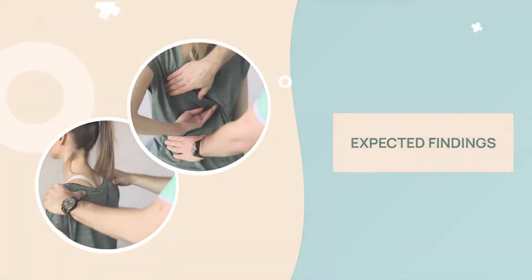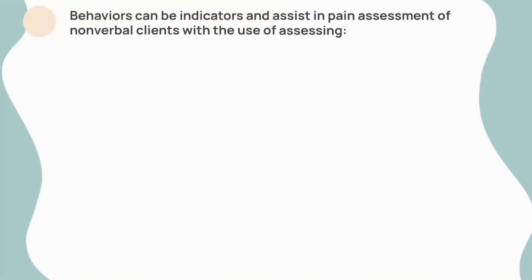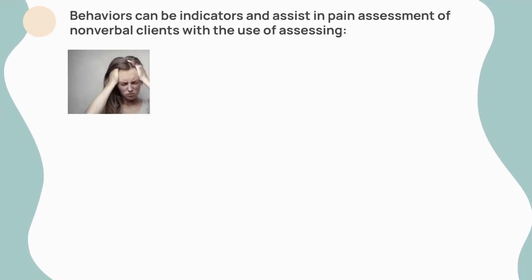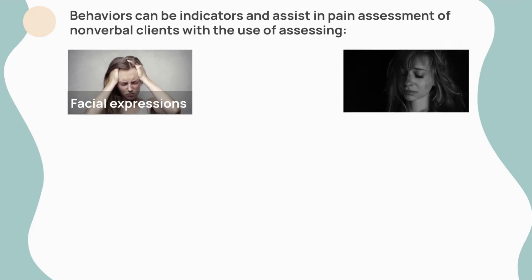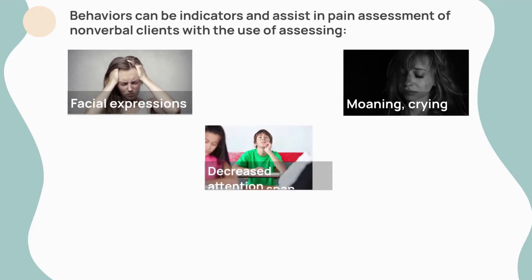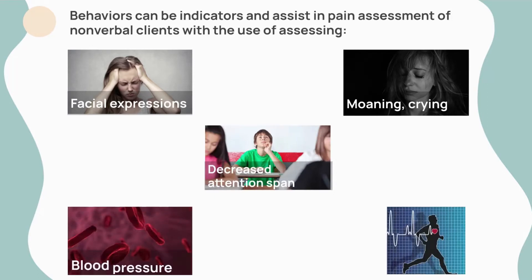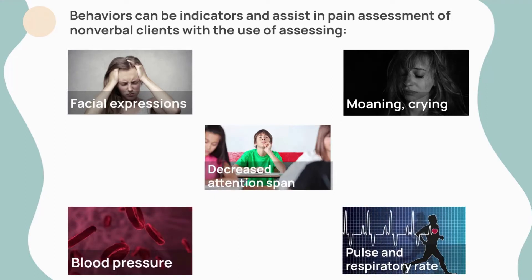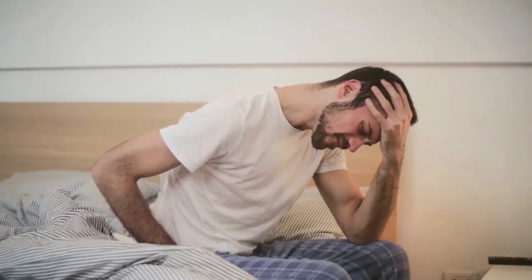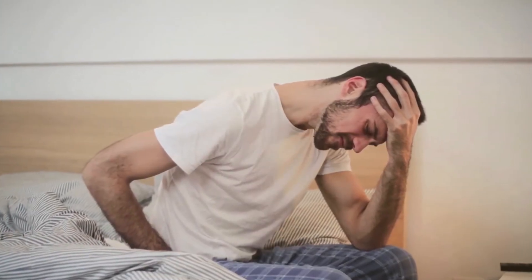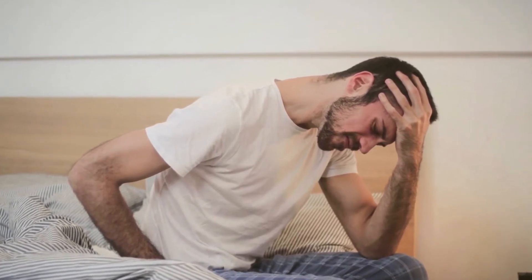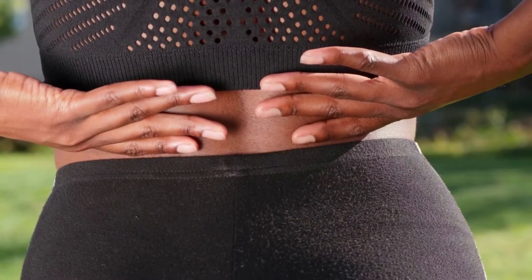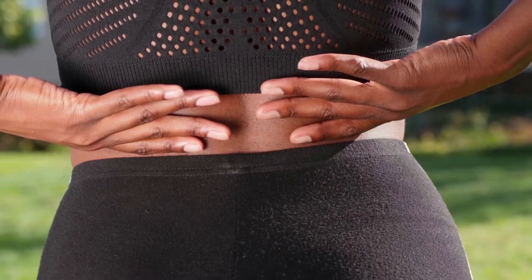Behaviors can be indicators and assist in pain assessment of non-verbal clients, including assessing facial expressions, grimacing, wrinkled forehead, body movements, restlessness, spacing, and guarding. Moaning and crying, decreased attention span are also indicators. Blood pressure, pulse, and respiratory rate can temporarily increase with acute pain, but eventually these vital sign increases will stabilize despite the persistence of pain. Therefore, physiologic indicators might not be an accurate measure of pain over time.